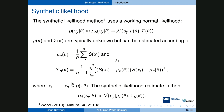The first synthetic likelihood paper was by Simon Wood in 2010, published in Nature. It proposes approximating the distribution of the model summary statistic with a multivariate normal distribution, where the parameters — mean and covariance matrix — depend on the parameter of interest theta. If we knew this relationship, we could plug the mean and covariance into the multivariate normal density, evaluate it at the observed summary statistic, and obtain our approximation to the summary statistic likelihood.